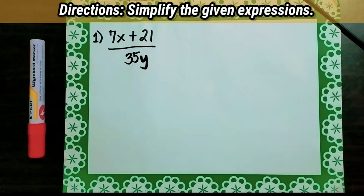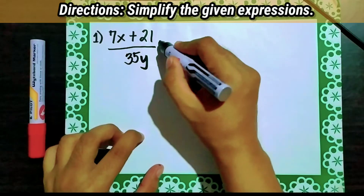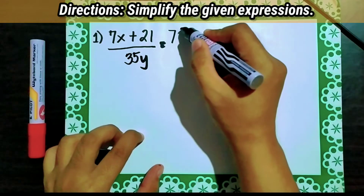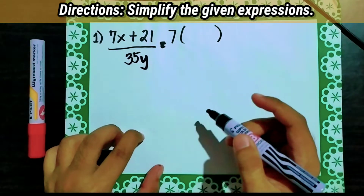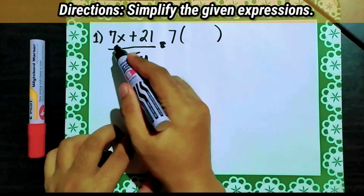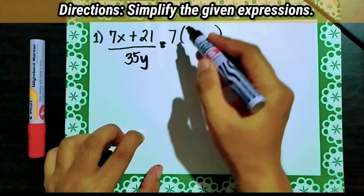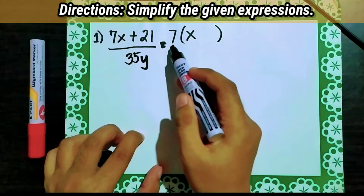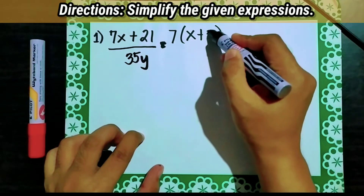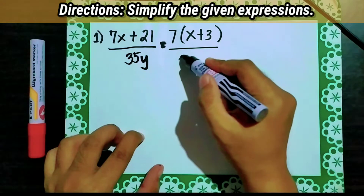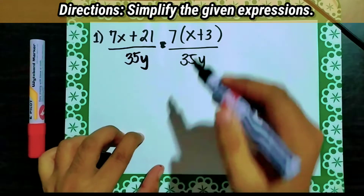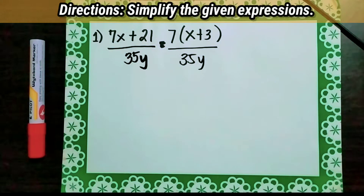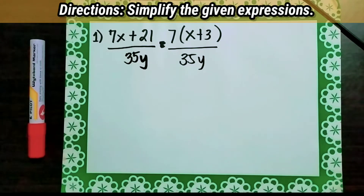Let's factor out 7, so it will become 7 times the quantity. Let's divide 7 in each term. So 7x divided by 7 is x, and 21 divided by 7 is equal to positive 3, over 35y. Next, divide the numerator and the denominator by the common factor. So 7 and 35 have a common factor.